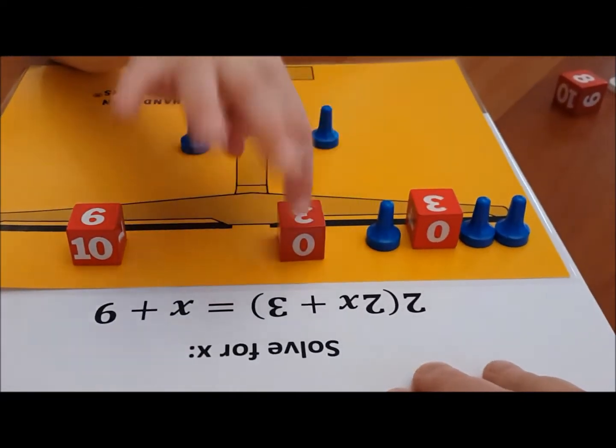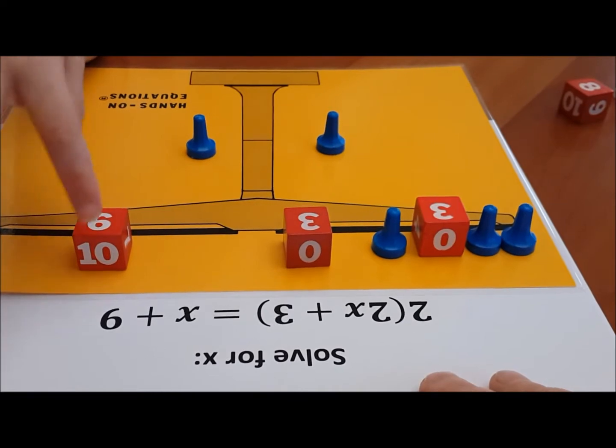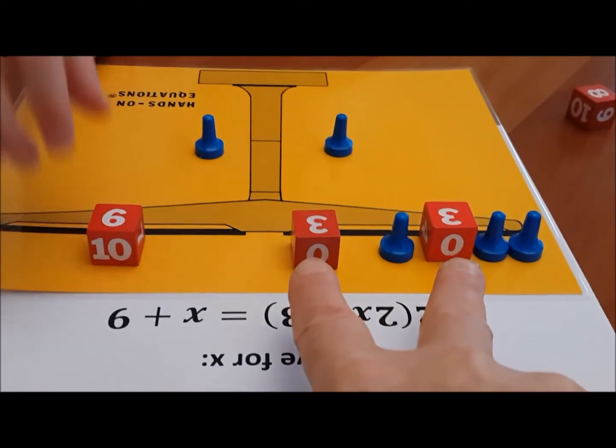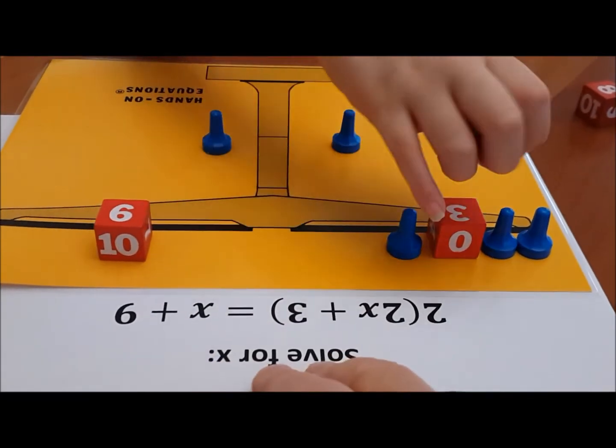I can take away 2 of these. 2 3's. I can take away 6. You take away 2 3's which are 6. Okay, do that. Take away the 2 3's which are 6.